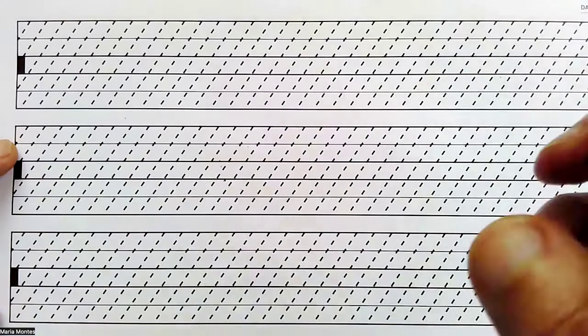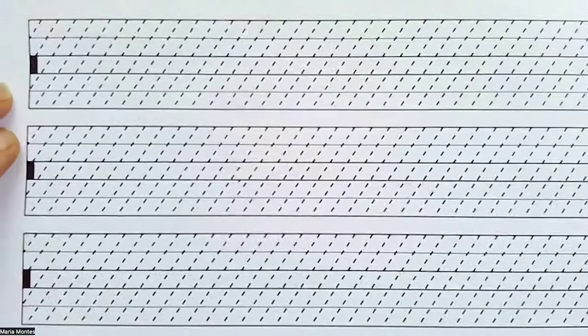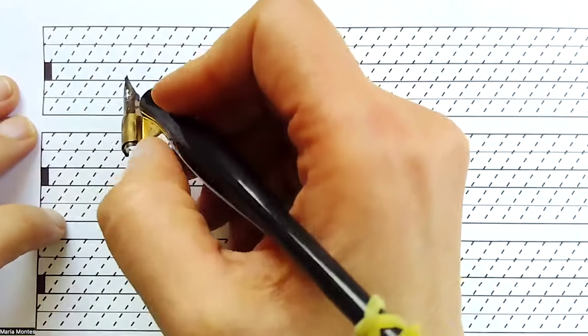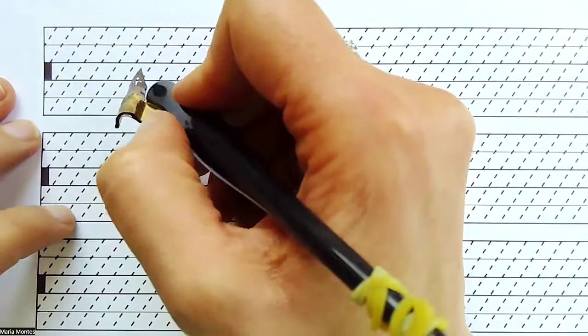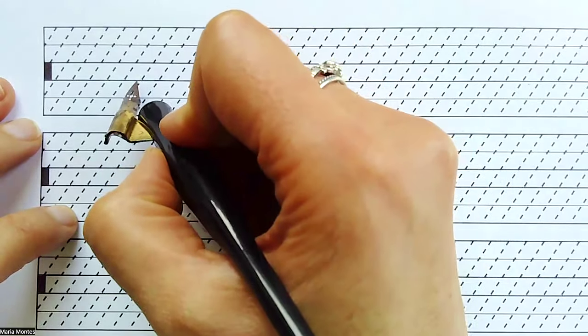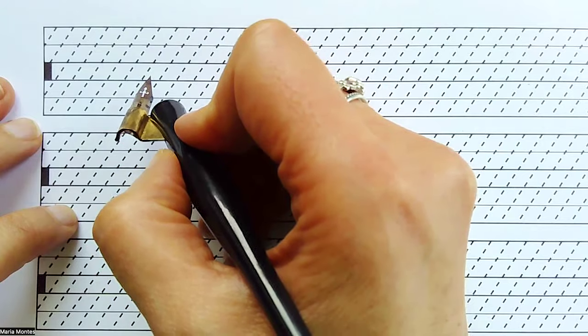So what I normally do is I place a paper on top and attach the paper and then we are going to start writing. But before doing that, I just want to talk about the angle of the writing and the position of the pen. As you know, with copperplate calligraphy, we have a very consistent rhythm of going up, getting a thin movement, going down, performing a thick downstroke.